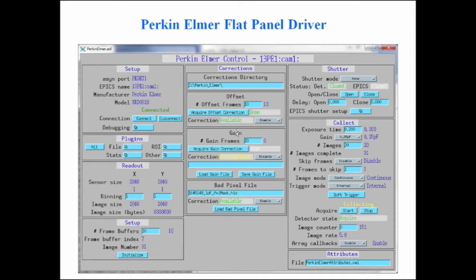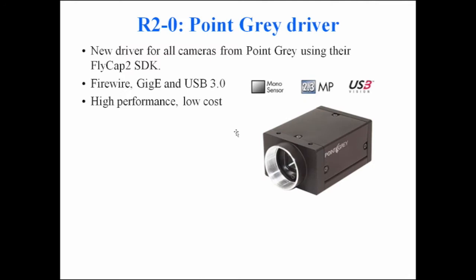The Perkin Elmer flat panel driver has controls for things like acquiring offset corrections — this detector tends to drift fairly quickly, so you need to collect a correction image frequently. The driver provides the ability to acquire these offset corrections, and you can write a high-level script that does this every N exposures.